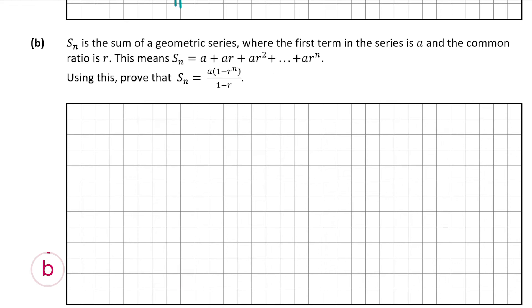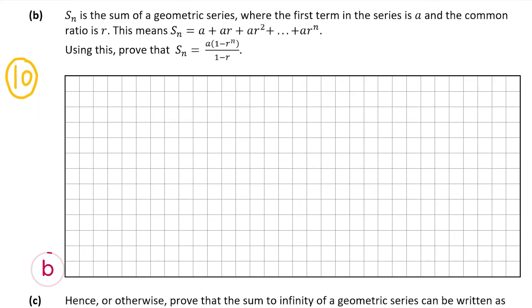We're now going to look at part b, which is also worth 10 marks. Part b tells us that S(n) is the sum of a geometric series where the first term is a and the common ratio is r. This means S(n) equals a plus ar plus ar² plus all the way up to ar^(n-1) — noting there's a typo on the paper; it should be ar^(n-1). Using this, we have to prove that S(n) equals a times (1 minus r^n) over (1 minus r).